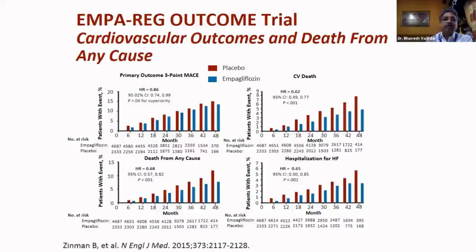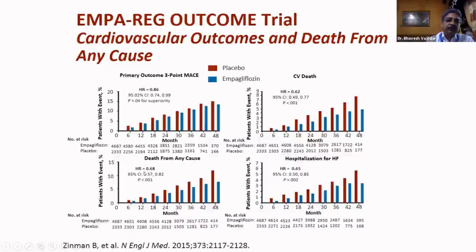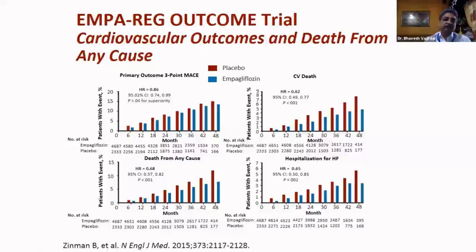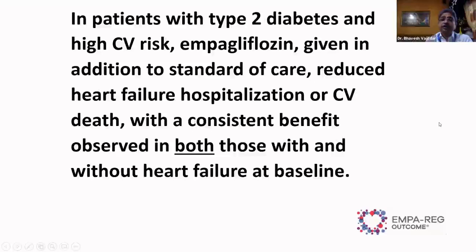The EMPA-REG trial conclusion: in patients with type 2 diabetes with high cardiovascular risk, empagliflozin given in addition to standard therapy reduced heart failure hospitalization, reduced cardiovascular death, and was beneficial even in patients not in heart failure. There were other similar trials — EMPA-REG for empagliflozin, CANVAS for canagliflozin, and DECLARE-TIMI 58 for dapagliflozin. Looking at MACE in patients with atherosclerotic cardiovascular disease, these drugs all had better outcomes compared to placebo.